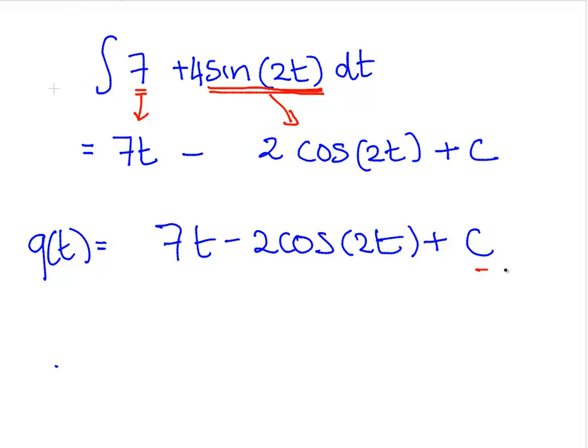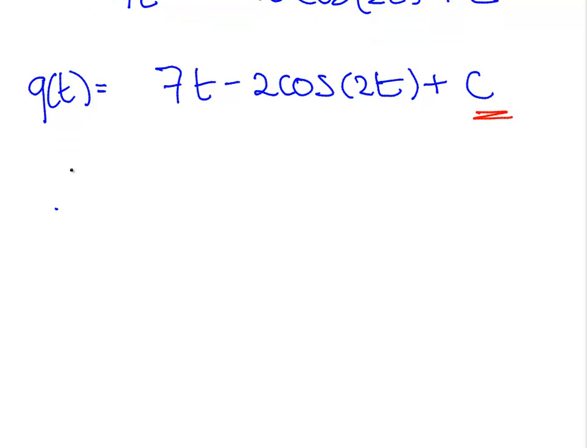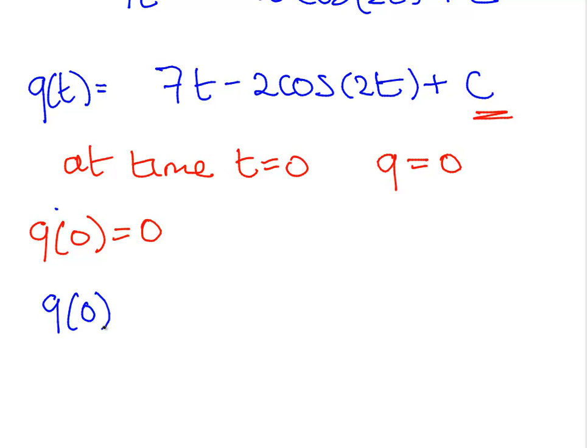But what we want to do is, we have this undetermined coefficient here at the end. And that is not really good enough because what we can do is find out what that is. We can come up with a value for it. What we were told earlier on is that at time t equals 0, q is equal to 0. So q of 0 is equal to 0. So what we are going to do here is put in 0 into our expression here.